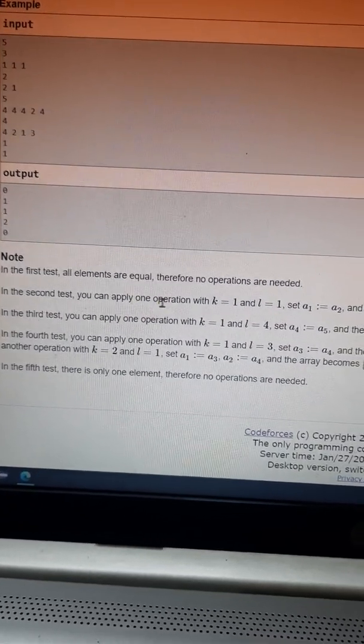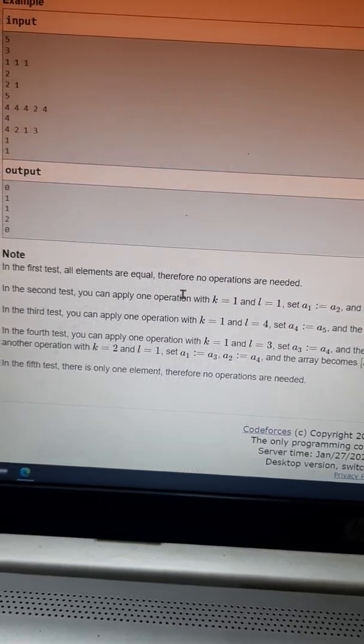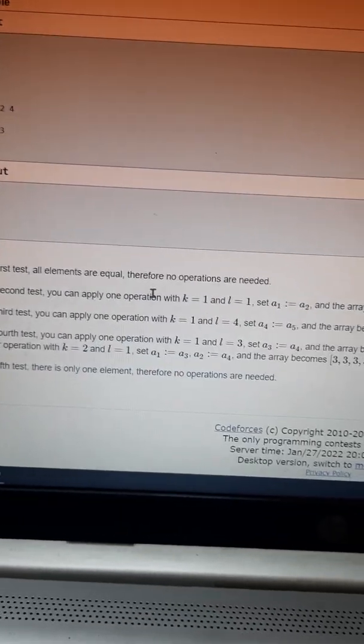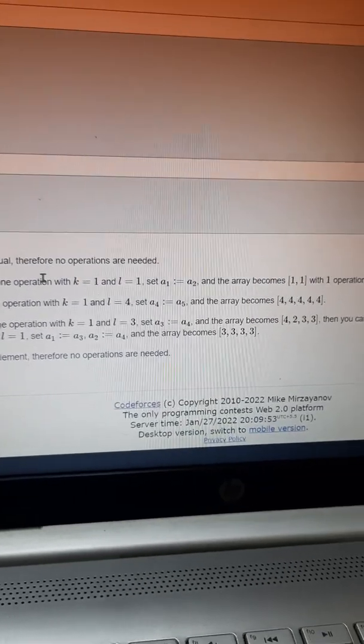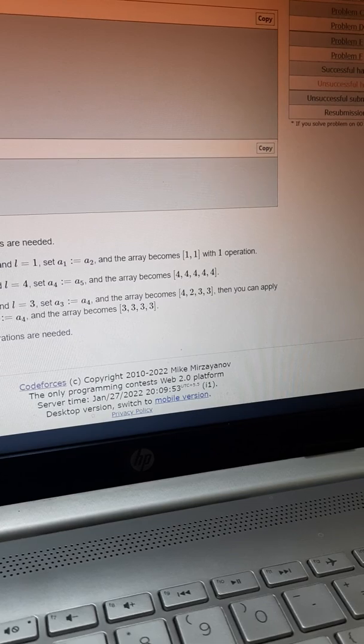In the second test, you can apply one operation with k equal to 1 and l equal to 1, such that a[1] equals a[2] and array becomes [1, 1] with one operation, so the output is 1.